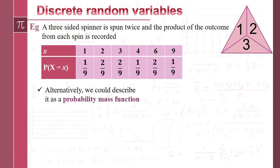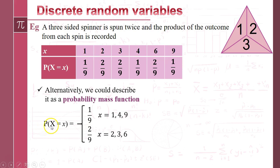The alternative way we could represent this is as a probability mass function, which is a more algebraic way of describing it. We write the probability that X equals x — so when x is 1, 4, or 9, the probability is 1/9, and when it's 2, 3, or 6, the probability is 2/9. That definition just matches what we've got in the table.